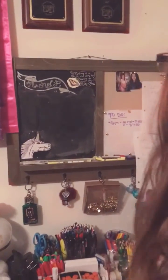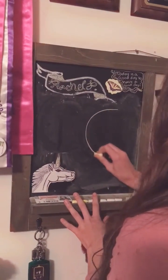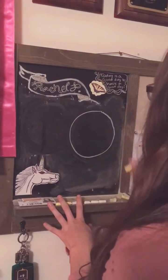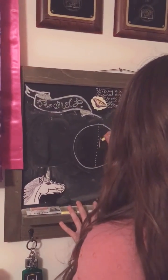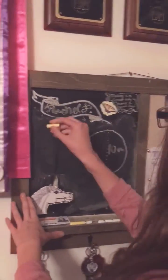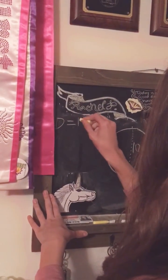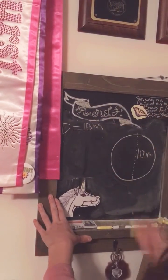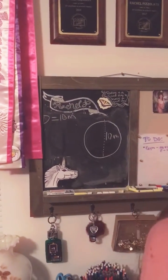Hi, my name is Rachel Pizzolatto and we're doing a mini geometry lesson with many more to come. So let's say we have a nice circle here and we have a diameter of 10 meters. So what is the circumference?